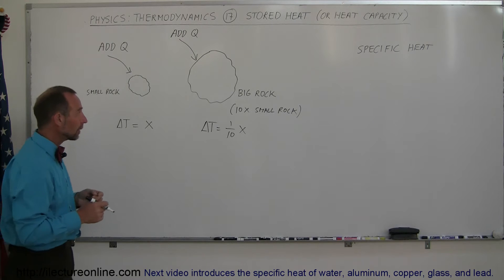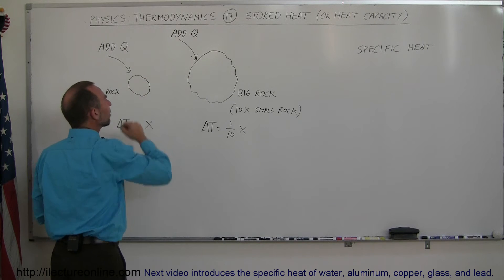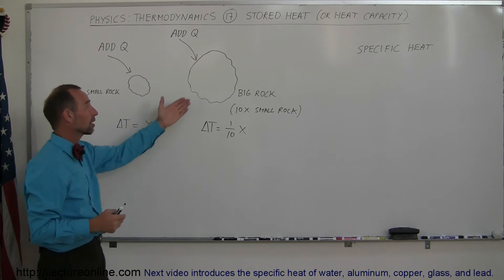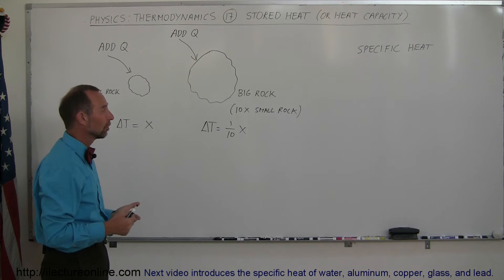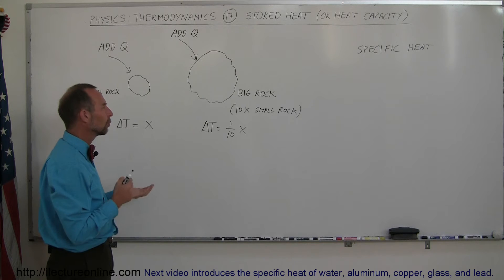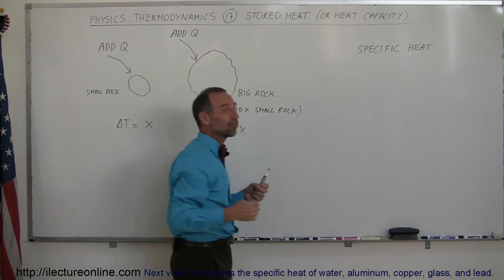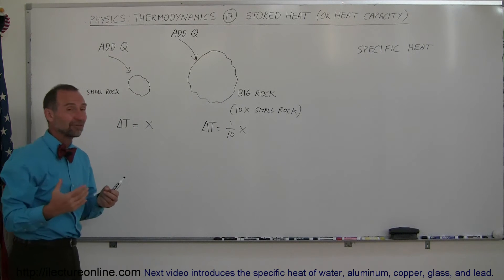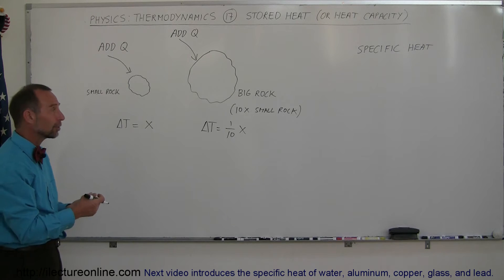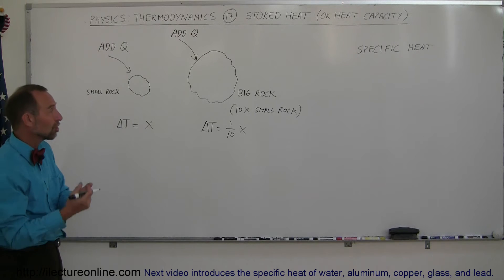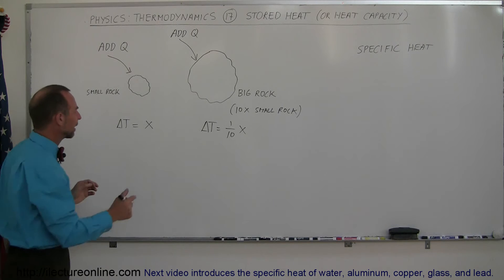How much more heat would we have to add to the big rock for the temperature change to be the same? If this rock is ten times as big, you would have to add ten times as much heat. So heat capacity is related to specific heat — for different materials you can have the same size object, but one can hold more heat than the other because it has a larger specific heat.